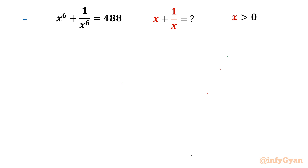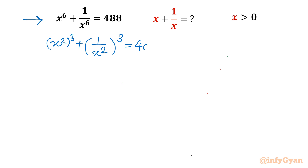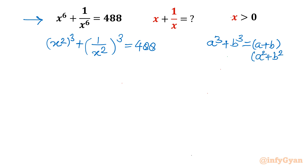I can write x⁶ as (x²)³, so the equation becomes (x²)³ + (1/x²)³ = 488. Now we have a sum of cubes, a³ + b³. I will use the identity: a³ + b³ = (a + b)(a² + b² − ab). This is a very important identity. Let us use it.